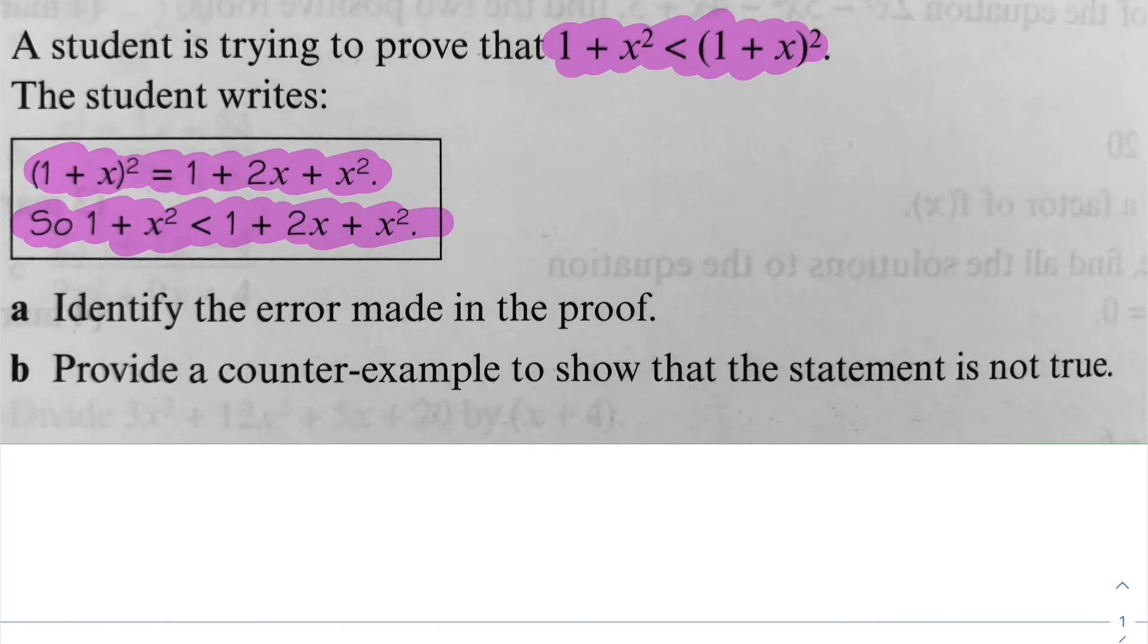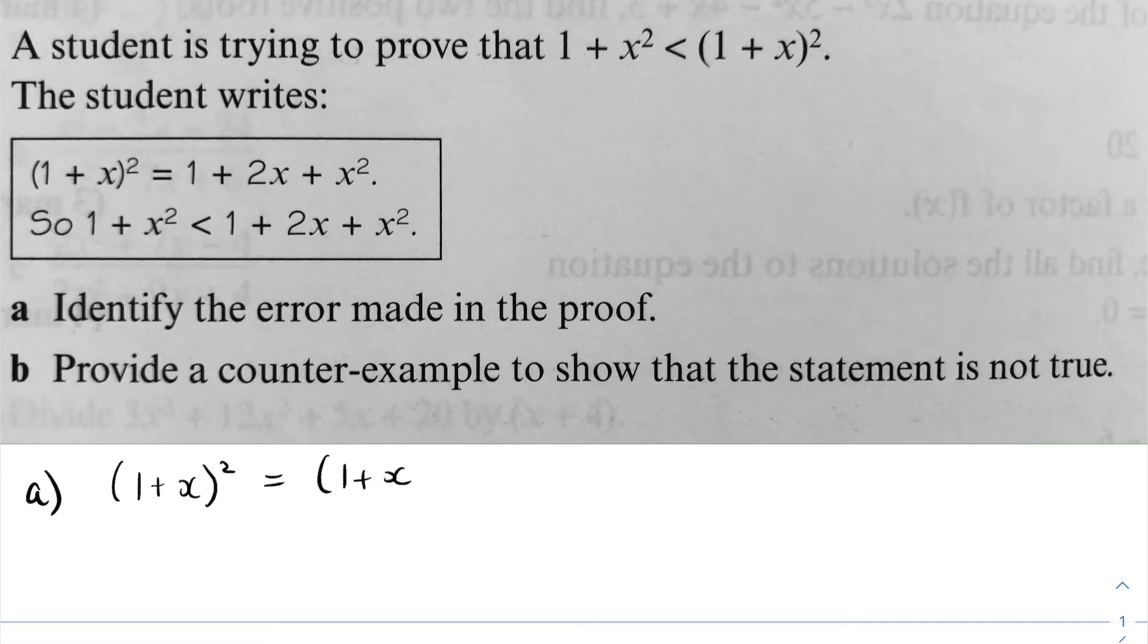Let's have a look at what the student writes. Starting with the first line: 1 plus x squared equals 1 plus x multiplied by itself. If I expand that in the usual way I'll get 1, 2x terms and x squared, simplifying to 1 plus 2x plus x squared. That's okay, nothing wrong with that first line.